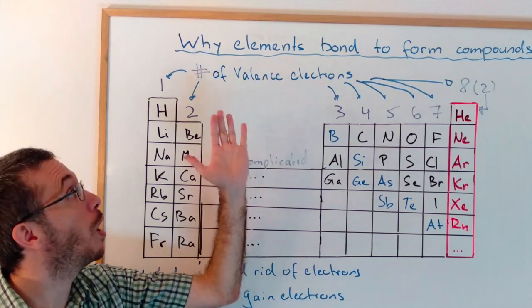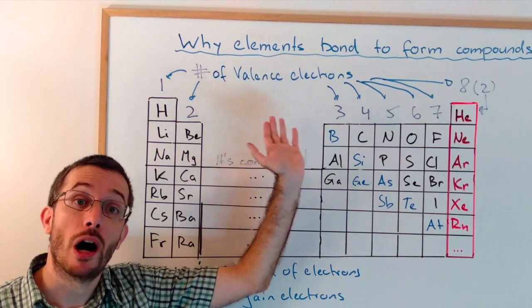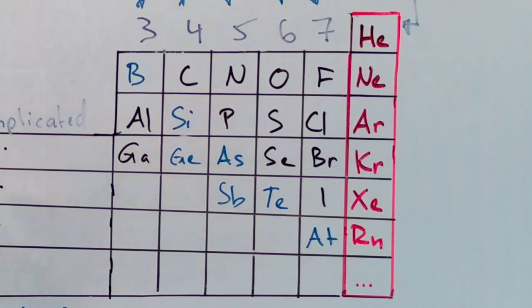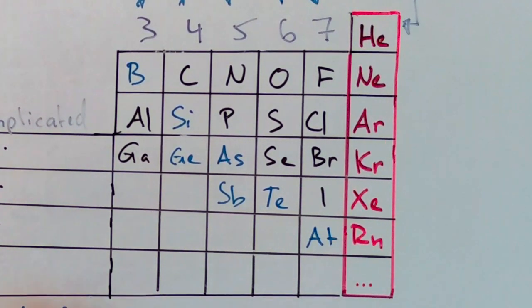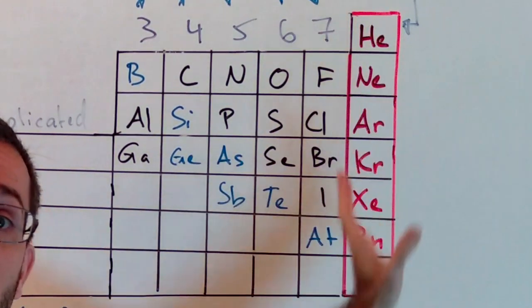That's a quick overview of why elements bond to form compounds. The quick and short answer is they form compounds in order to achieve the electron configuration of the noble gases.